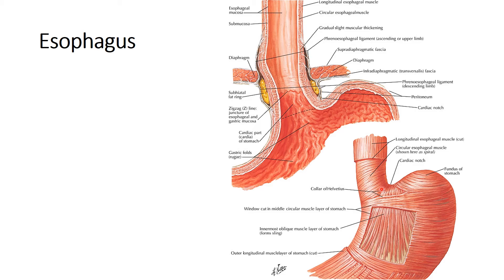The innervation of the abdominal part of the esophagus comes from the vagal trunks accompanying the esophagus. The left vagus becomes the anterior gastric nerve, and the right vagus gives the posterior gastric nerve — renamed as anterior and posterior gastric nerves. The thoracic sympathetic trunk is also important, with the greater and lesser splanchnic nerves, and the esophageal nerve plexus follows the left gastric artery, forming plexuses of nerves controlling this region.